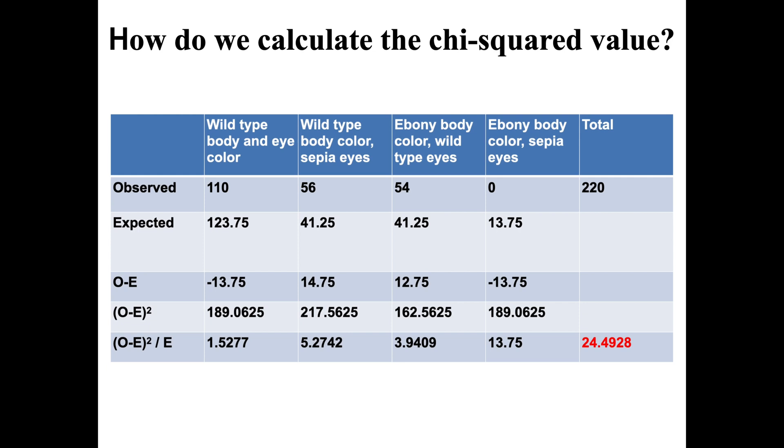In order to get our chi-squared value, we need to add all of that up. We need to sum everything on the bottom row, so our chi-squared value is 24.4928.